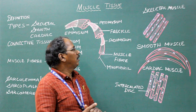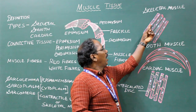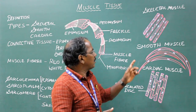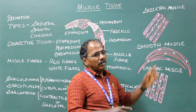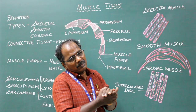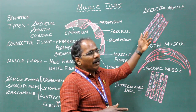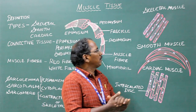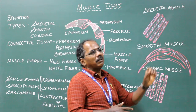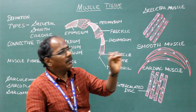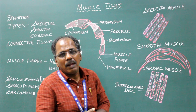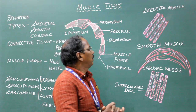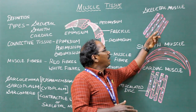Skeletal muscle. It consists of elongated cylindrical fibers which do not branch or anastomose. It is multi-nucleated — that is, a single fiber will have many nuclei — and peripherally placed. The nucleus is not in the center; it is near the margin. Presence of transverse striations.